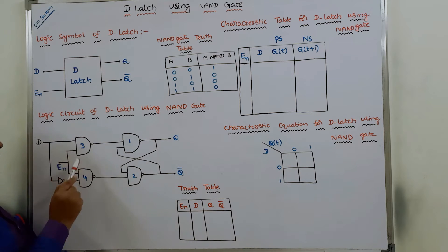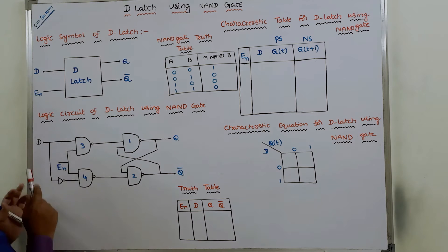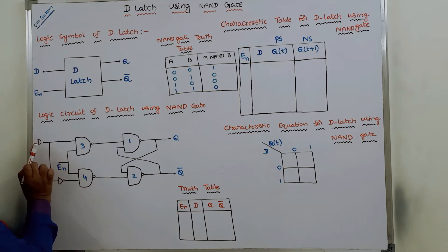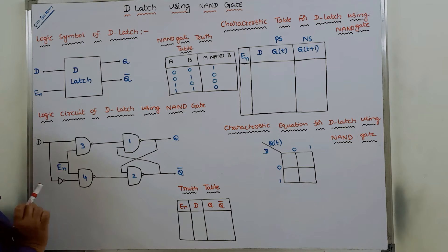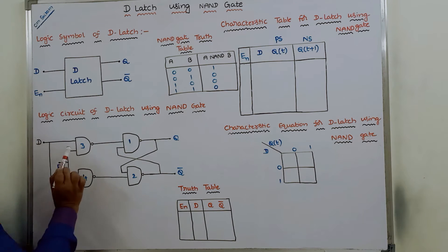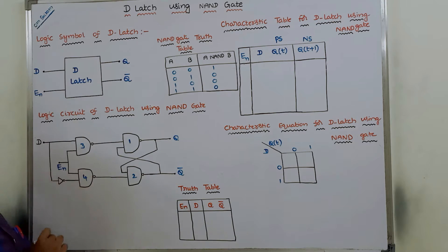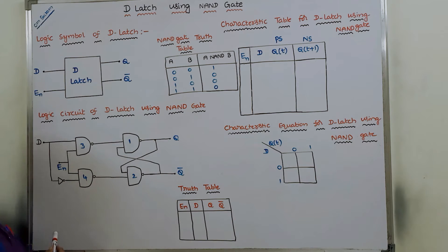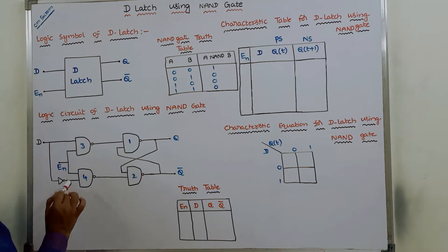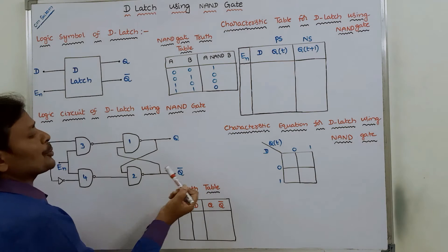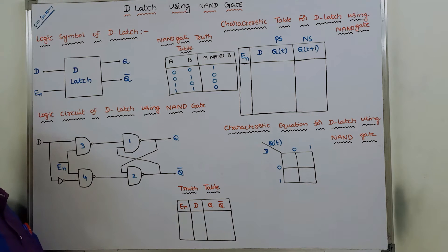The third and fourth NAND gates take the D input and enable input. For the third NAND gate, the D input is applied directly as one input and the enable input is the other input. For the fourth NAND gate, one input is the enable input and the other input is the complement of D. Finally, the circuit produces two outputs: Q and Q bar.